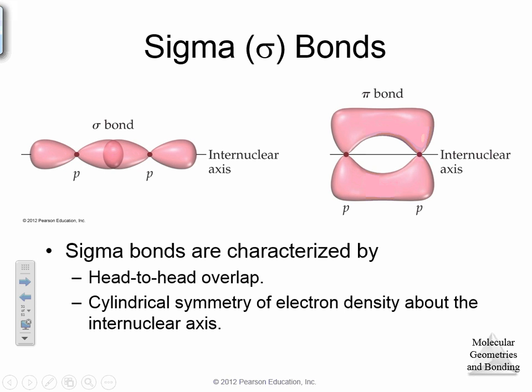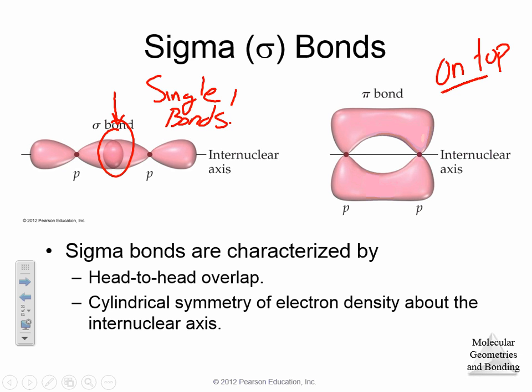When we talk about hybridization, we talk about two different types of bonds. We can talk about sigma bonds and we can talk about pi bonds. Sigma bonds are head-to-head overlap — the orbitals overlap right at the center. Sigma bonds occur in single bonds; they always occur in single bonds. Pi bonds, on the other hand, occur on top of one another — the orbitals stack above and below.